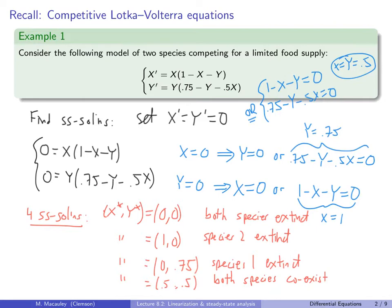This is a nonlinear system. What we will do next is look at each steady state separately and linearize the system — approximating it by a linear system, similar to approximating a curve with a tangent line in calculus. For each linearization, we'll analyze whether the steady state is a saddle, stable node, unstable node, and then piece together the full phase space picture.